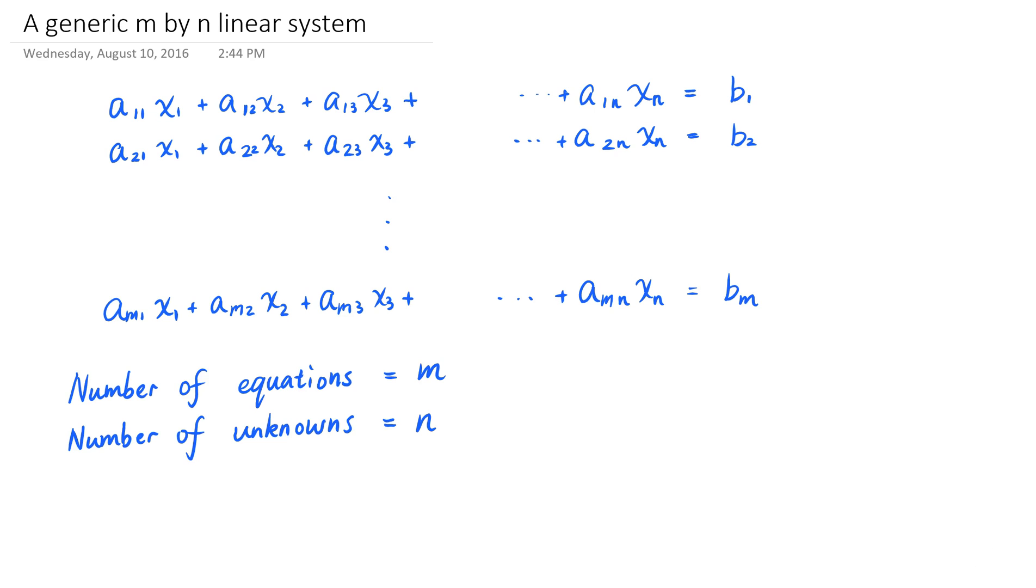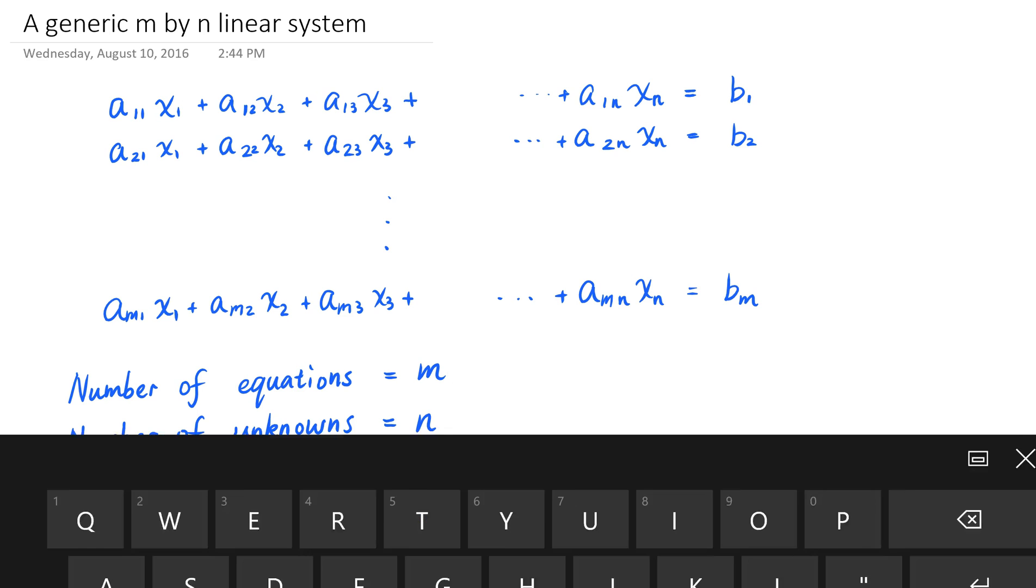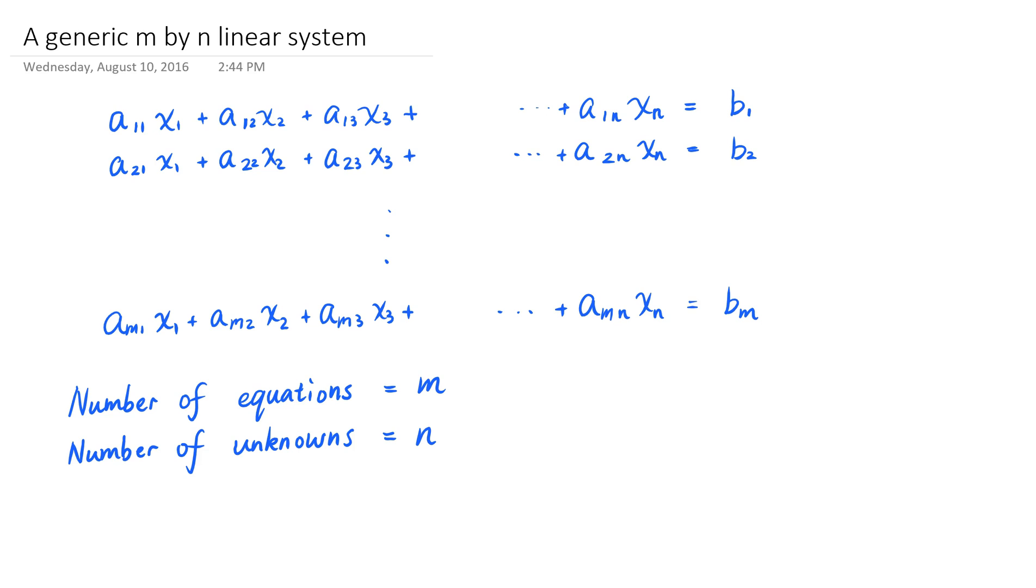So this is a generic linear system where there are m equations and n unknowns. And therefore, it's called an m by n linear system.